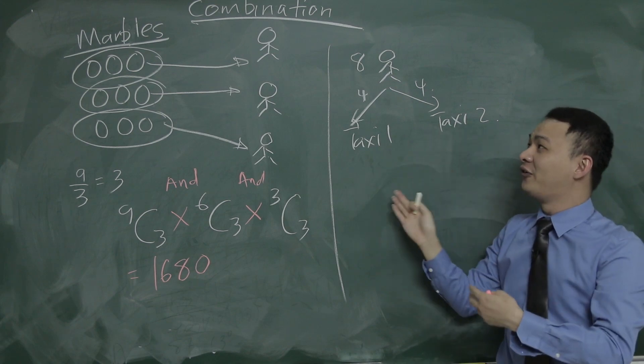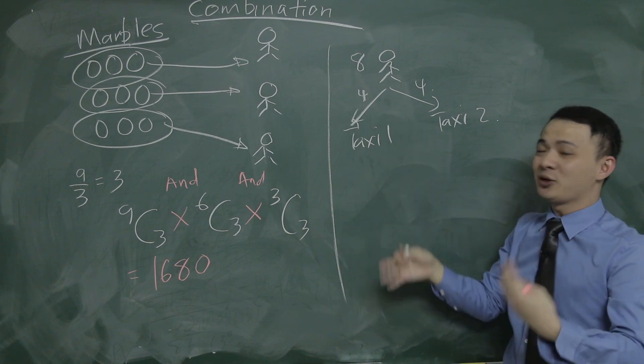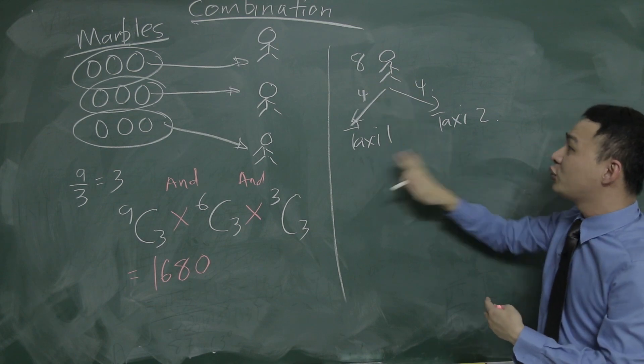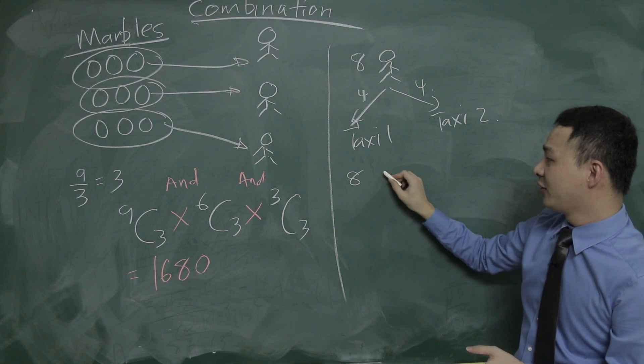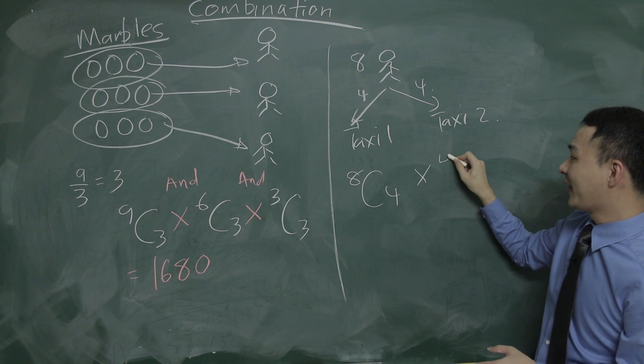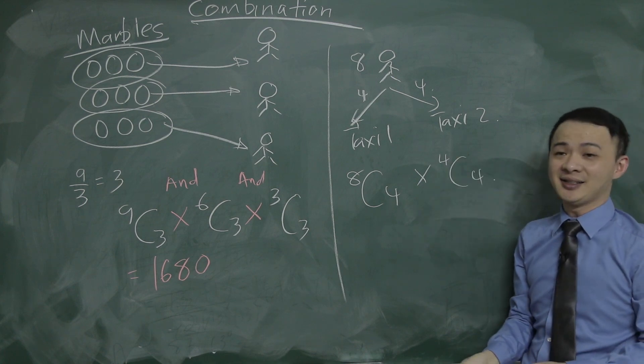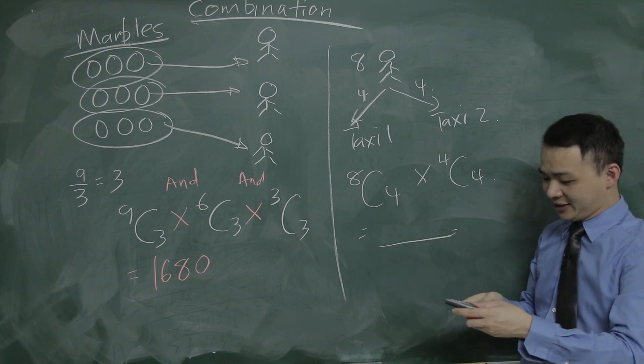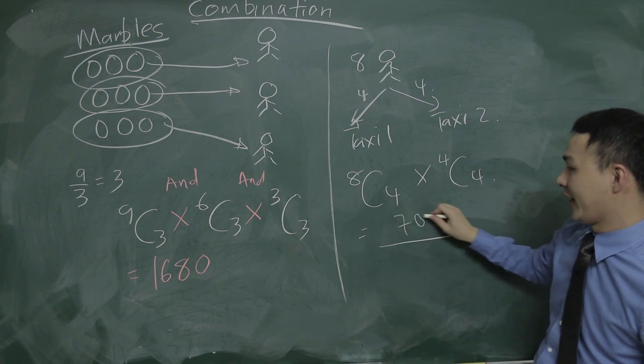So the number of ways to make all of the eight students fit into two different taxis. So what we will do is, we will choose the eight students, from eight students here, we will choose four to fit in the first taxi, and then we have another four students left, will sit on the another taxi, and then type in the calculator, you should get another answer here, which is the number of ways of arranging them, which is 70 ways.